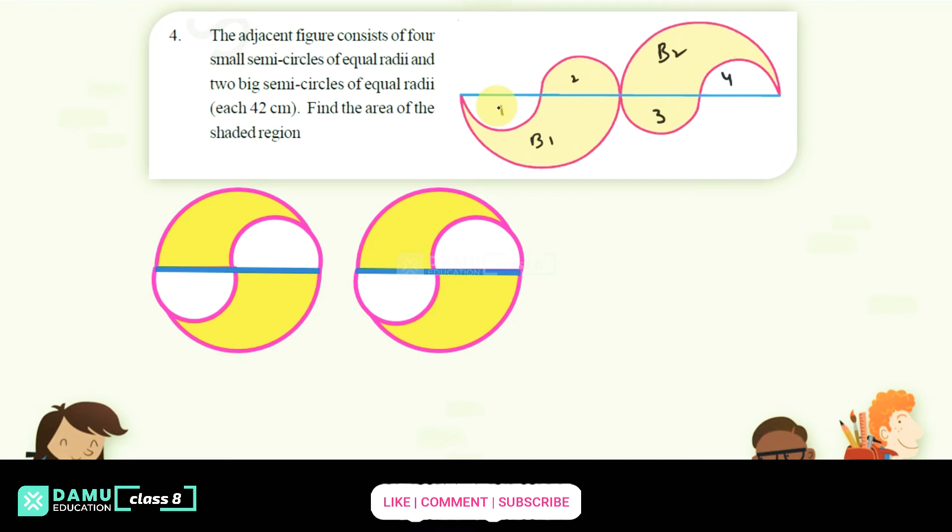Find the area of the shaded region. This is the area we have to find. If this small semicircle is shifted to this place, it will occupy like this. And this one we can shift here, it will occupy like this.